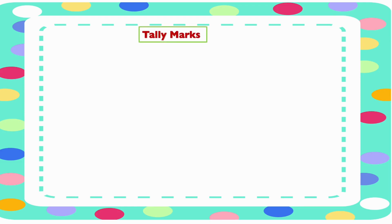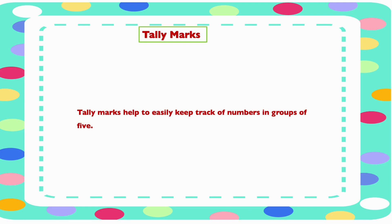In this video we are looking at tally marks. Tally marks help to easily keep track of numbers in groups of five. It helps to give a clear view of data. Data is represented using straight lines and a slant line. Four straight lines and one slant line makes one group. Now let's look at how numbers are represented using tally marks.